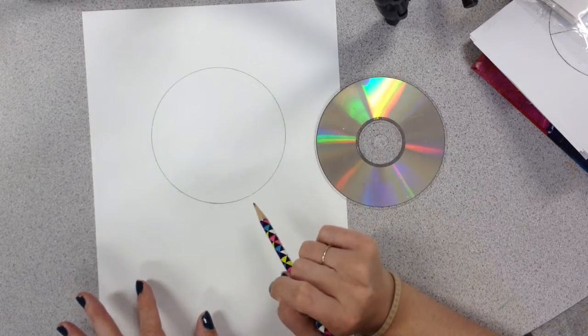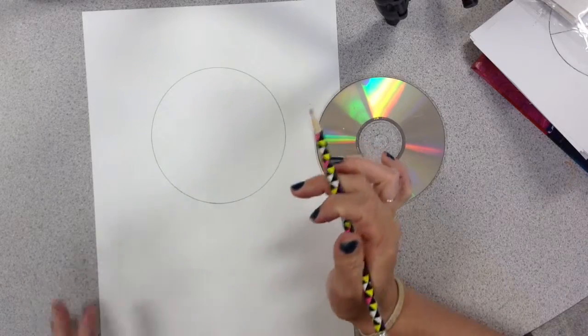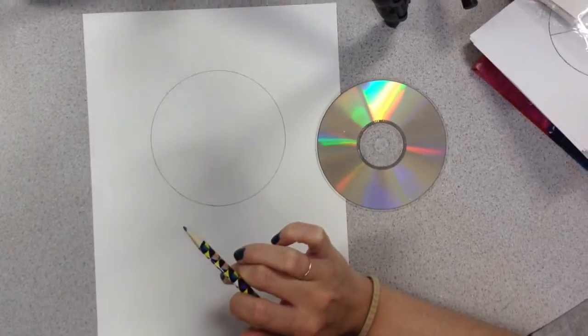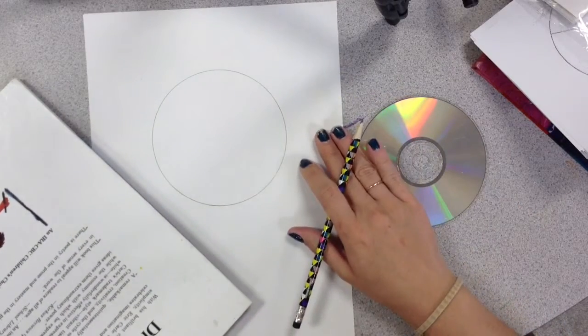Now, we're going to need to use a ruler or a straight edge of something, maybe even just a book. If we don't have enough rulers, I'll try and bring enough for everyone. And we're going to divvy it up into six different pieces.